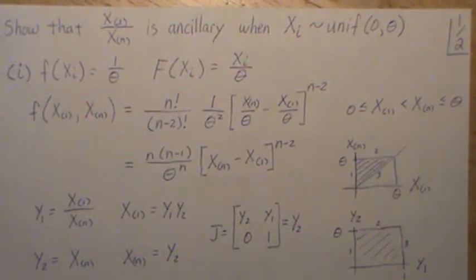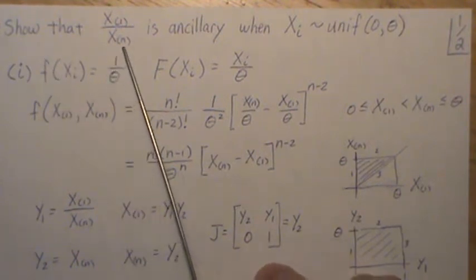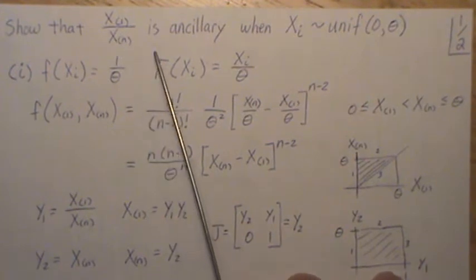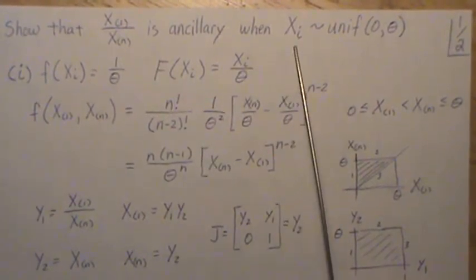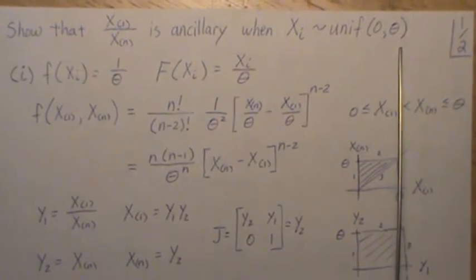Hello, this is the next video in a playlist that I'm calling Parameter Estimation. And here we're going to look at an example of an ancillary statistic. And so we're going to try to show that the first order statistic divided by the nth order statistic is ancillary when Xi comes from a uniform zero theta distribution.